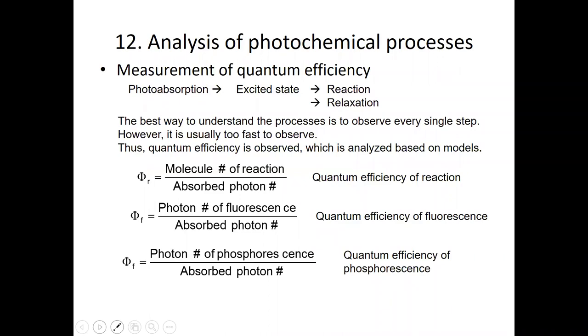During photochemical processes, we usually measure the quantum efficiency. Quantum efficiency has several different types defined, like quantum efficiency of reaction, quantum efficiency of fluorescence, and quantum efficiency of phosphorescence. Because these values can be measured, we use these values for the analysis.